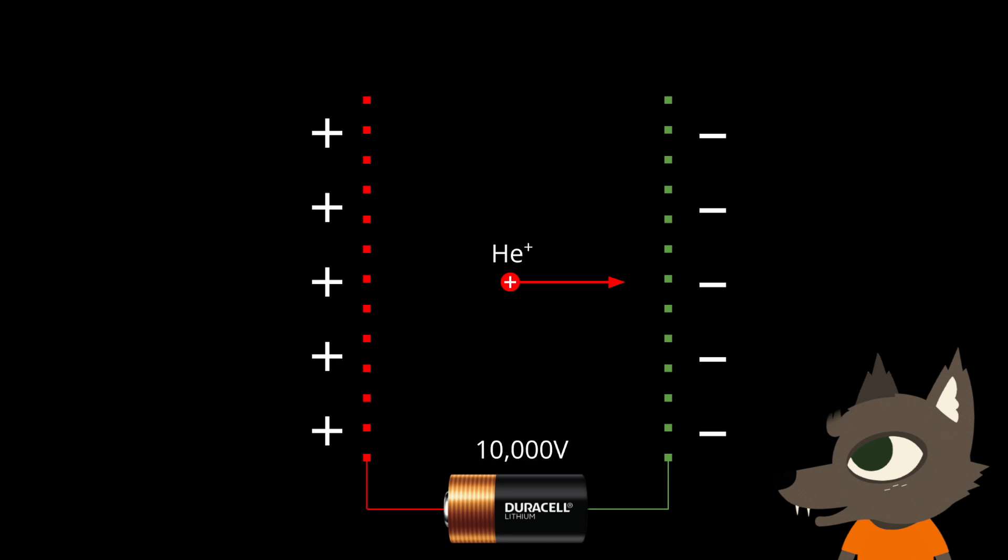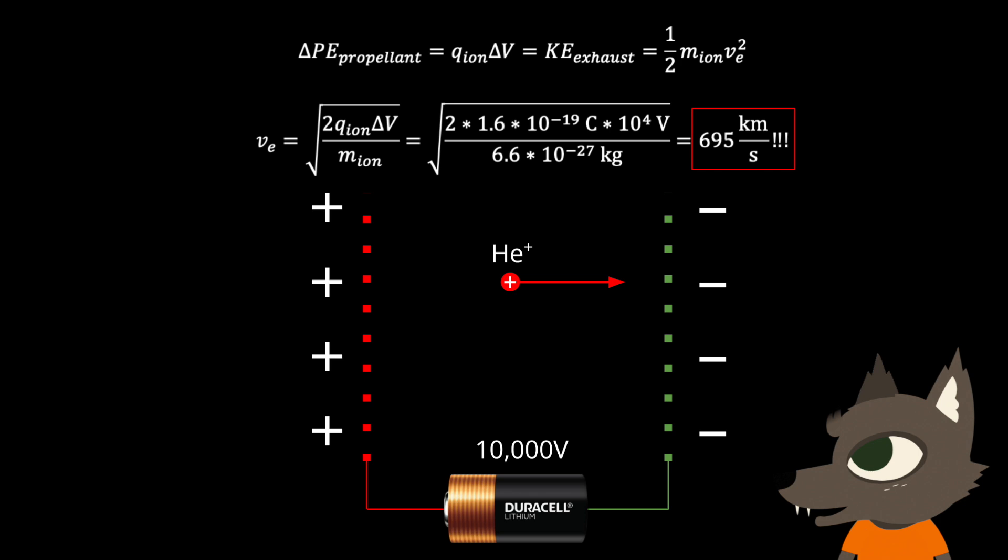For example, if we used helium ions as our propellant and charged our plates to a voltage of 10,000 volts, which is roughly the voltage of a shock of static electricity, then we can accelerate our exhaust to over 500 kilometers per second, or in imperial units, about 3 billion furlongs per fortnight.